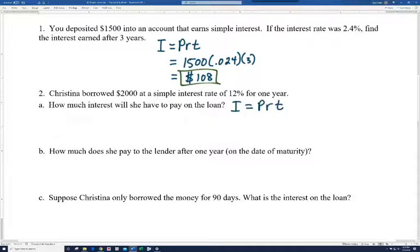So in this case, we're going to use the same formula, I equals PRT. And the principal is $2,000. The interest rate written as a decimal is 0.12 or 12 hundredths. And the time is one year. So if you multiply that out, you should get $240.